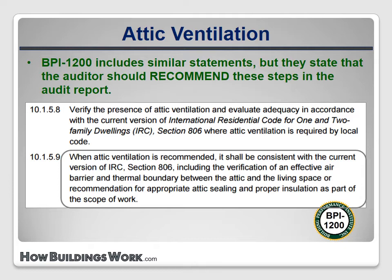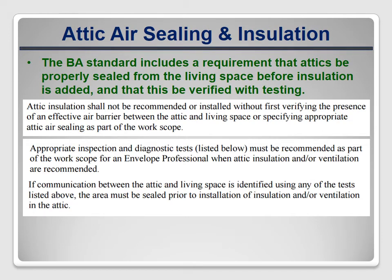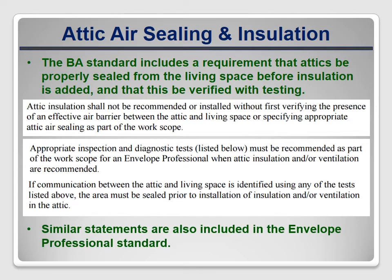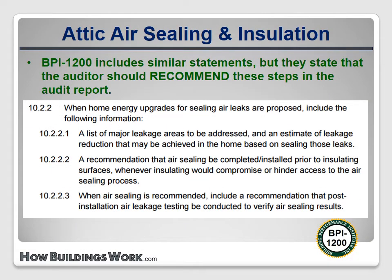The BA standard requires contractors to do the right thing during installation, while BPI-1200 requires the auditor to recommend that the customer do the right thing when they hire someone to do the work. The BA standard requires contractors to properly seal between an attic and the adjacent living space before adding any insulation to that attic. The envelope professional standard includes very similar requirements. If you want to add insulation, air seal the attic — you can do that without adding ventilation. But if you want to add attic ventilation, then the attic must be insulated and air sealed before it can be done. BPI-1200 requires a similar recommendation: that air sealing be completed prior to insulating surfaces.